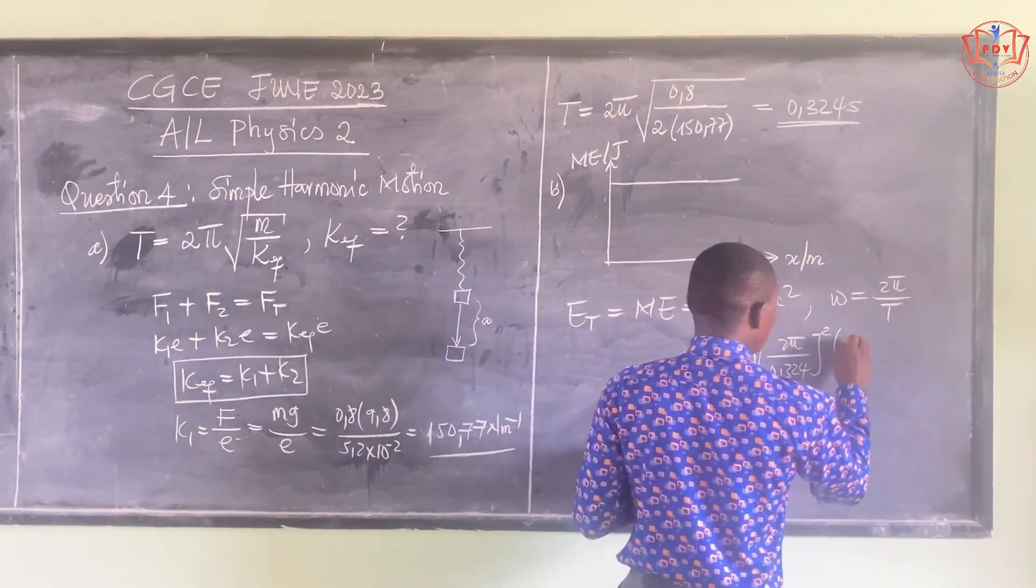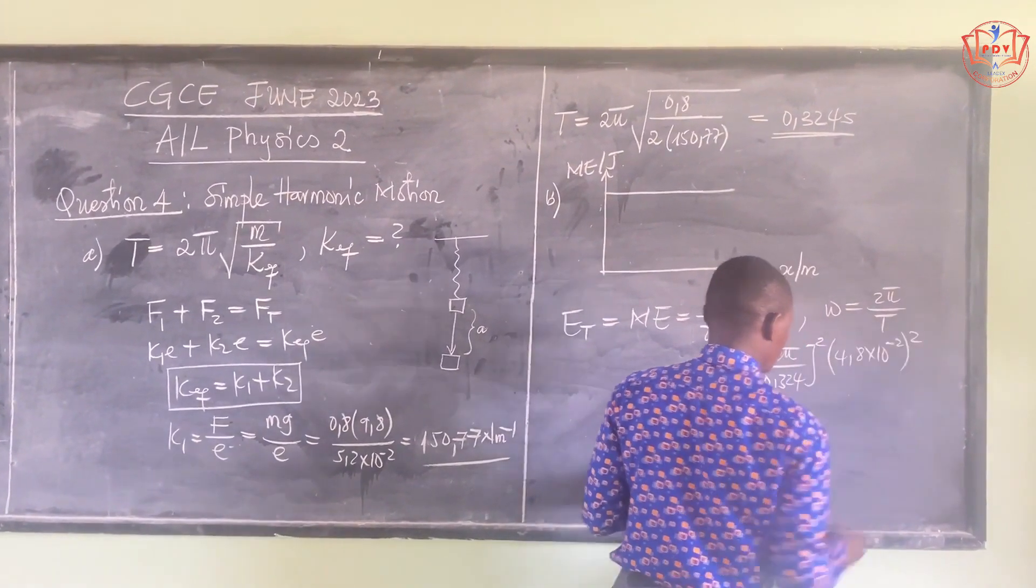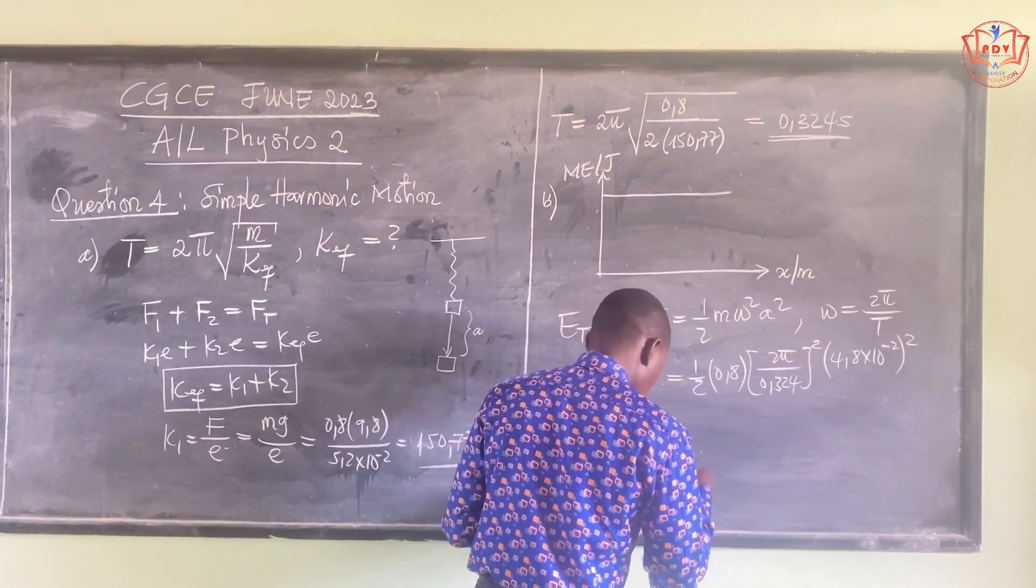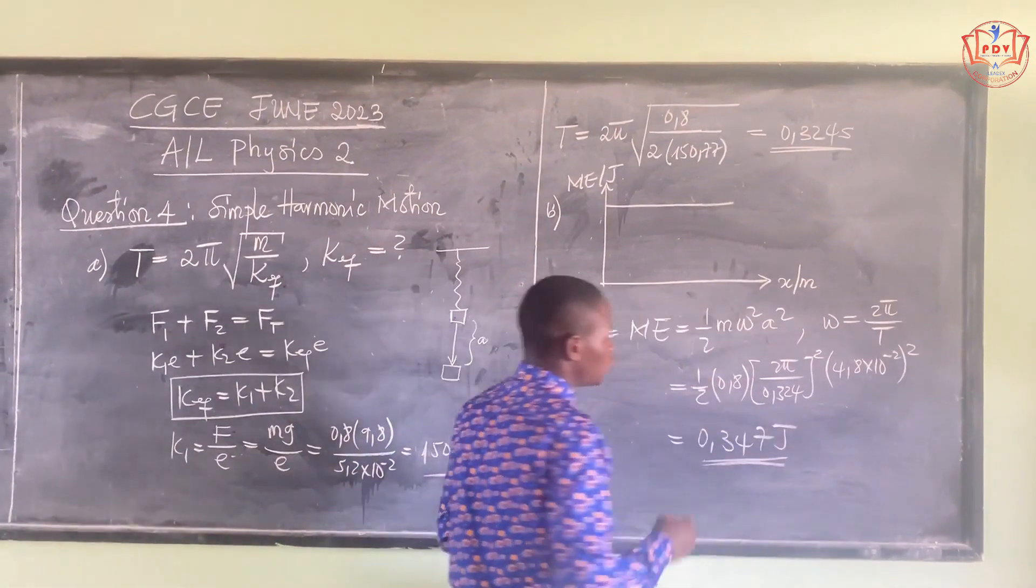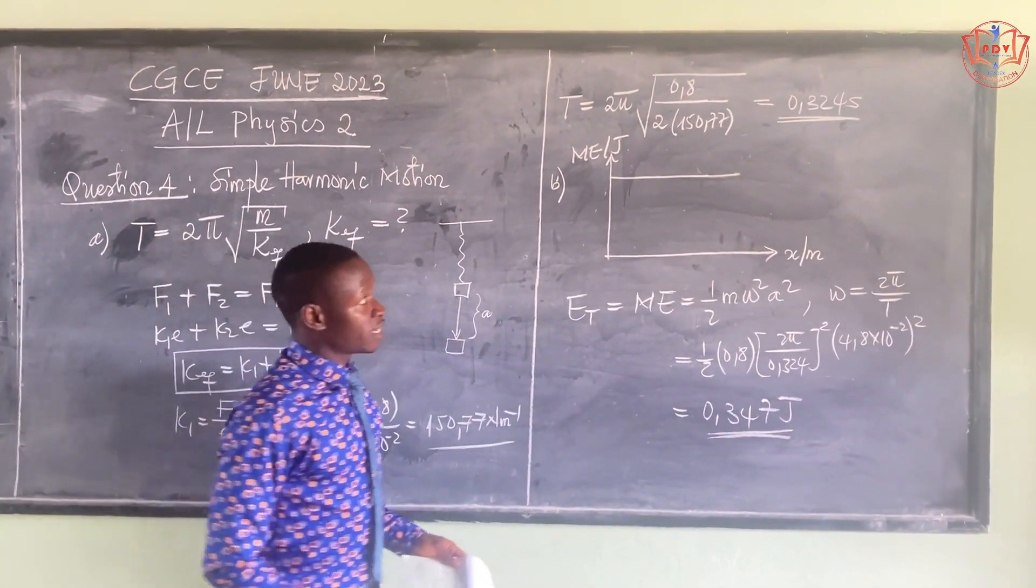So the amplitude given to us is 4.8 × 10^-2 meters. And that gives us a total energy of 0.347 joules. So that is the total energy of the mass or its mechanical energy.